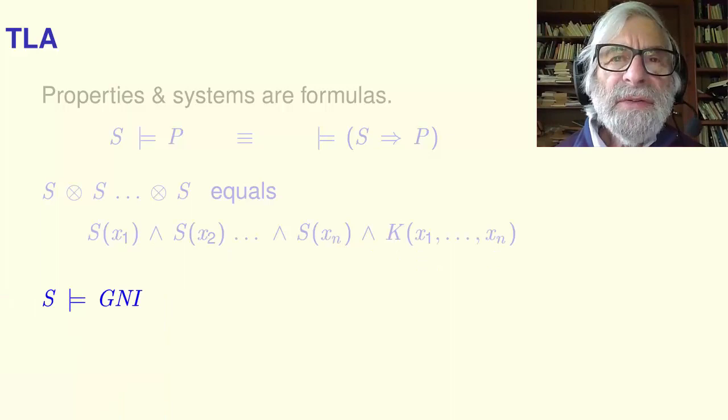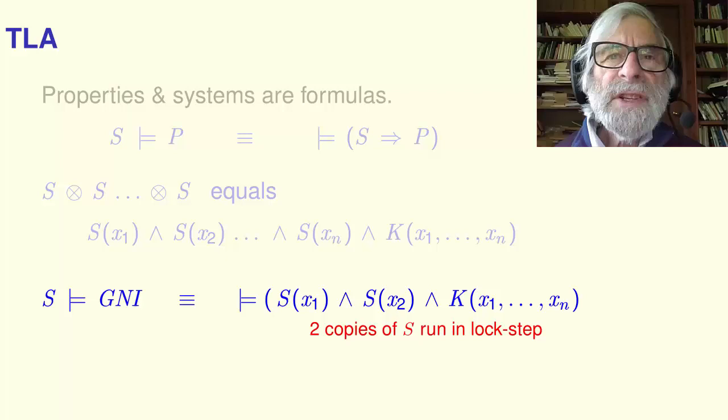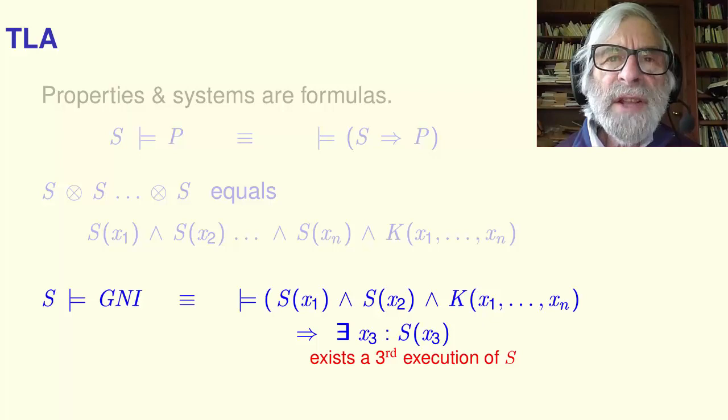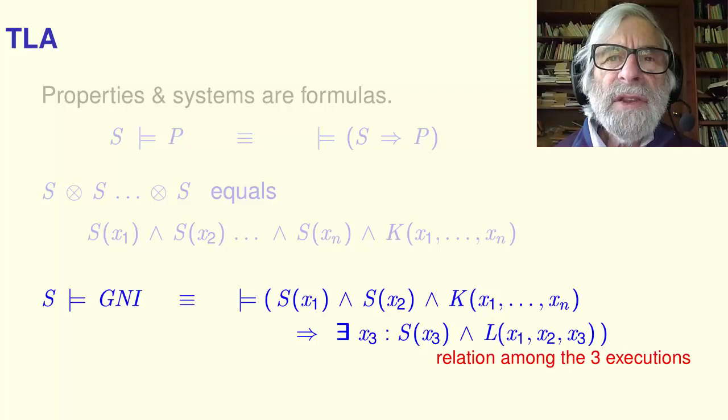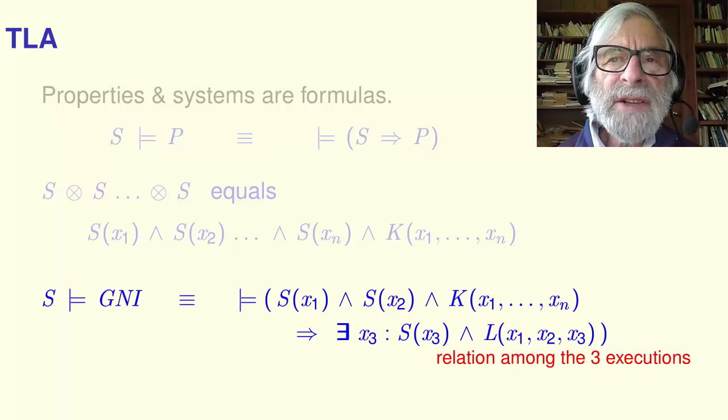It is now easy to define the property asserting that S satisfies GNI. Here are the two copies of S that execute in lockstep. This composite system must satisfy, that is, this formula must imply, that there exists another execution of S represented by the values of the variables X sub 3, with the right relation among the three executions. That is, the values of the public variables of X sub 3 equal those of X sub 1, and the values of its secret variables equal those of X sub 2.